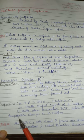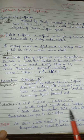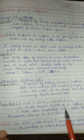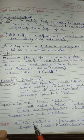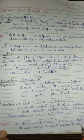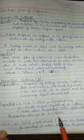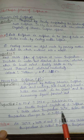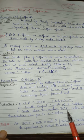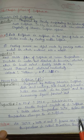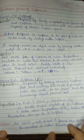Below 369 Kelvin, monoclinic (beta) sulfur changes to alpha sulfur (rhombic). 369 Kelvin is the transition temperature — below this temperature alpha sulfur is stable, and above this temperature beta sulfur is stable.